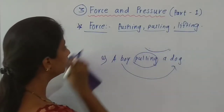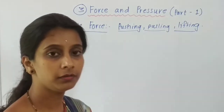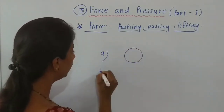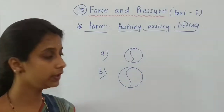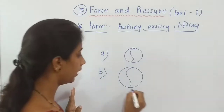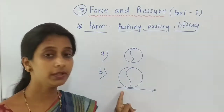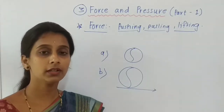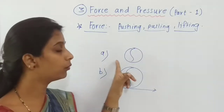In the last standard we studied Newton's first law of motion. Let us revisit it here. Suppose this is a ball at position A — ball A is steady, it is at rest. And this is another ball at position B which is in motion. In the case of ball A, it will remain at rest as long as we do not act a force on it.